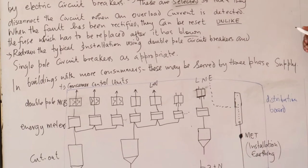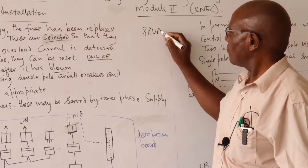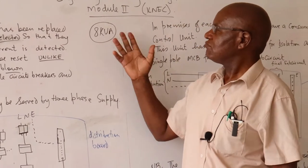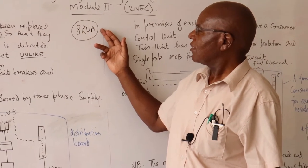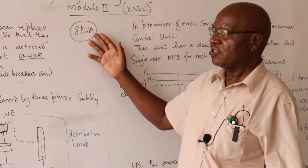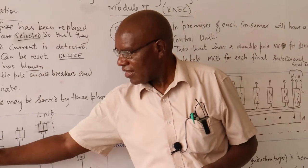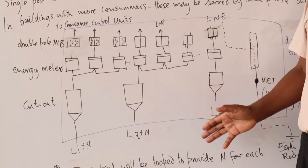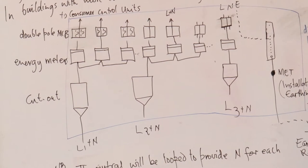Normally when they are supplying power, they assume 8 kVA for a single user — that's what I see in most of their bills or calculations. So when the supply is more than 8 kVA for domestic installations, they calculate how many per phase, and whether they will need to supply three-phase or single phase. Buildings with more consumers will be served by the three-phase power supply.